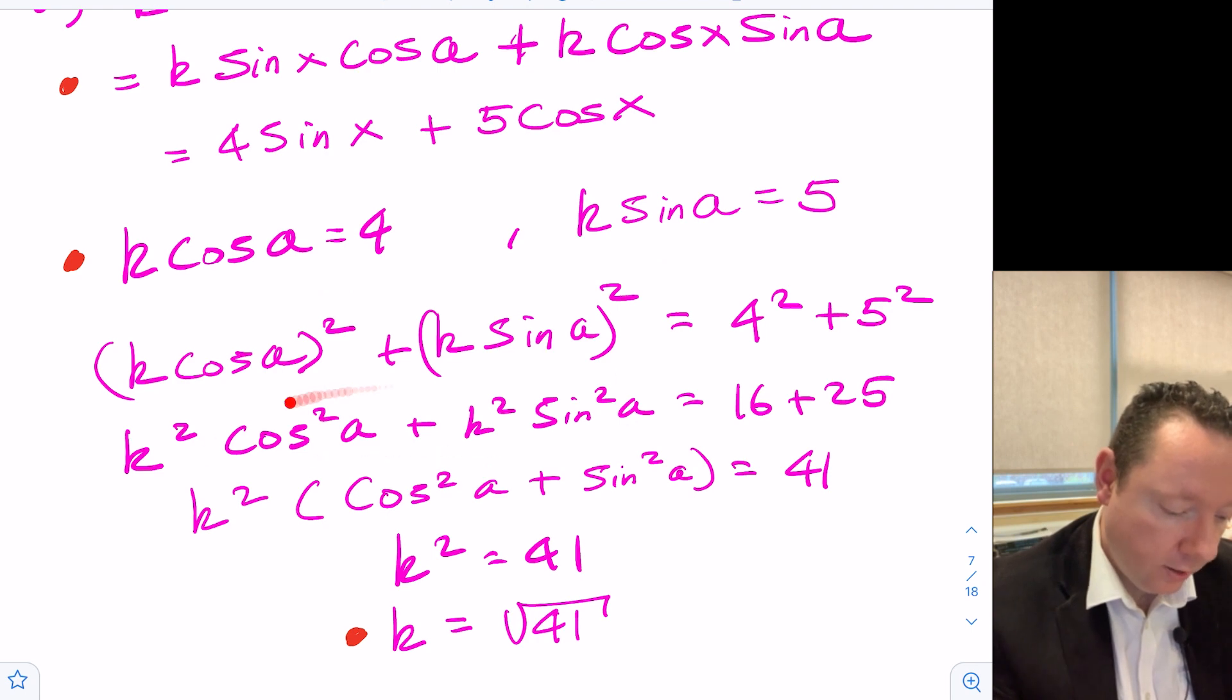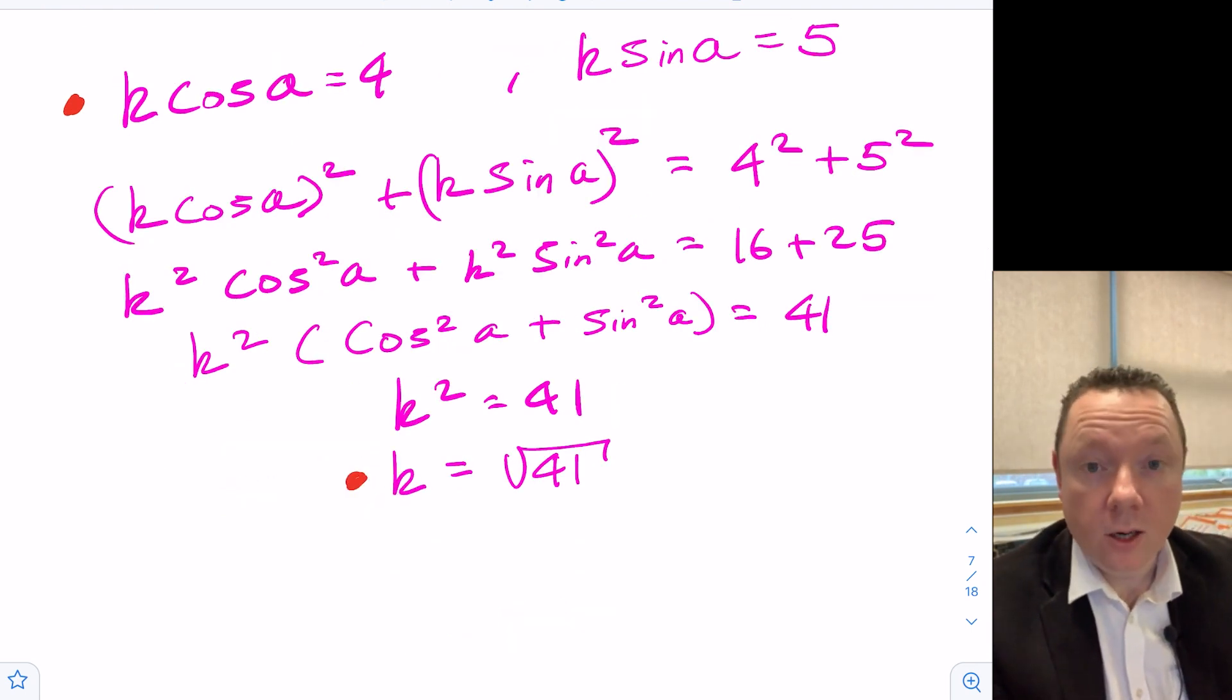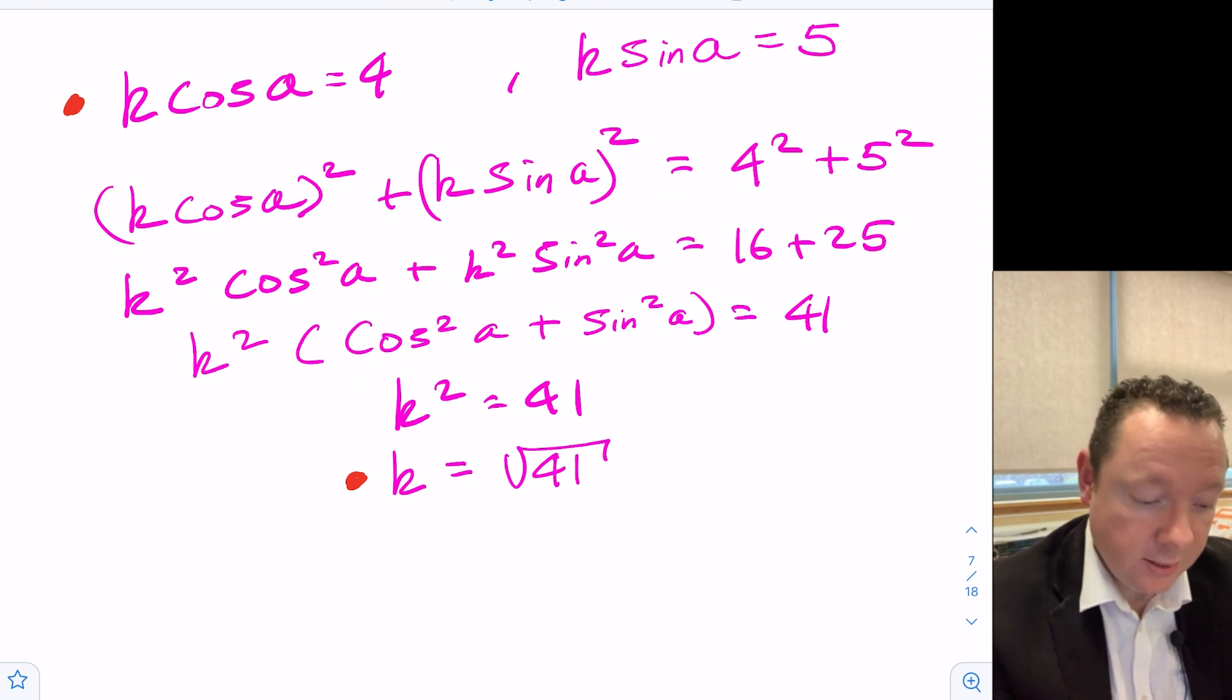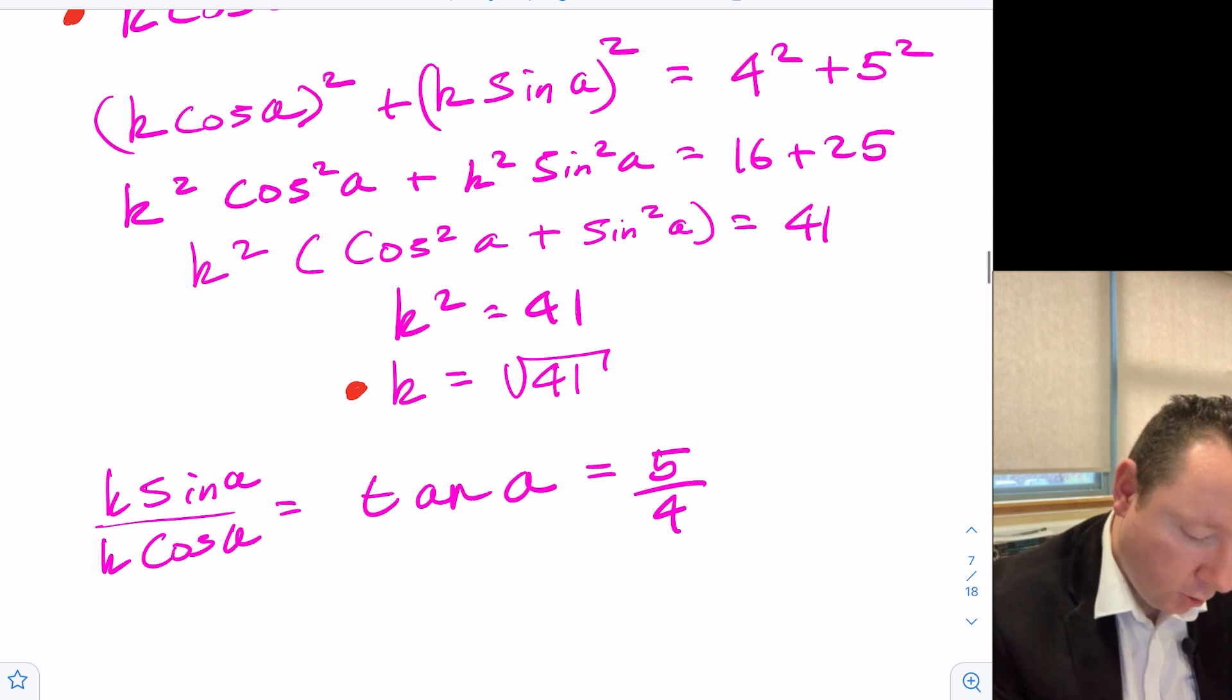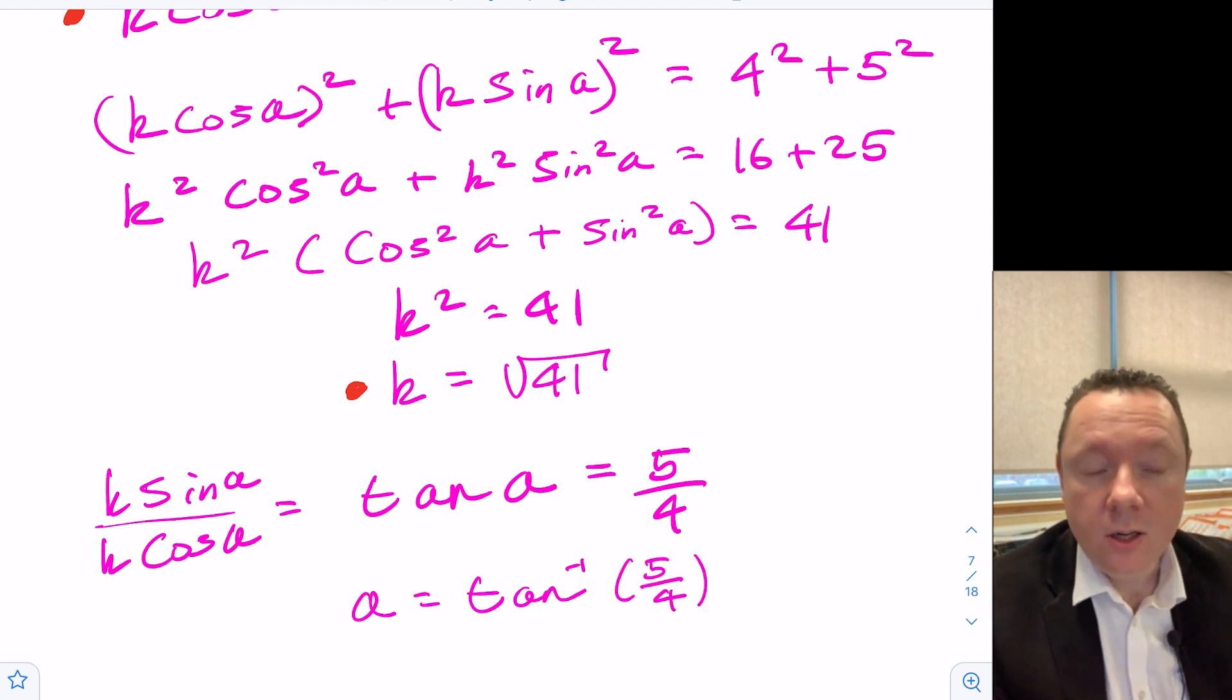So we've got our k, so we now need to work out our angle a. Remember, sin divided by cos is tan. So we can do k sin a over k cos a equals tan a, which equals 5 quarters. So we can do a as the inverse tan of 5 quarters in radians, remember, which is 0.896.